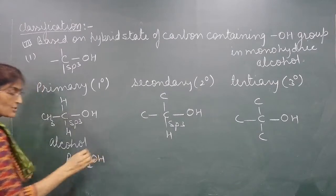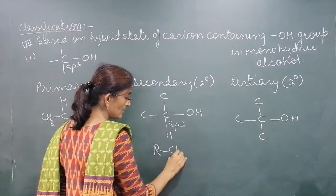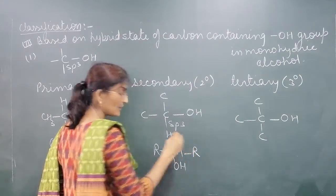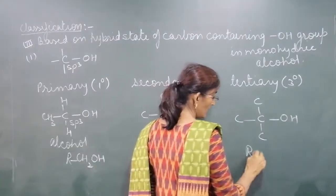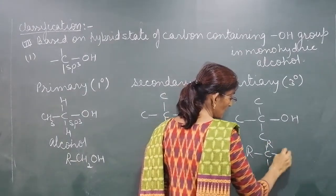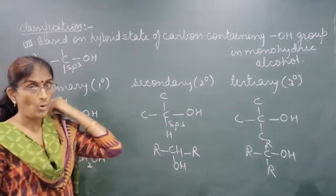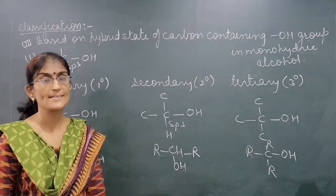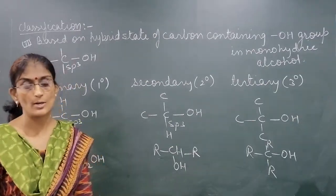This is called Tertiary or three-degree alcohol. The general formula for Primary alcohol is R-CH2-OH. For Secondary alcohol it is R-CH(OH)-R. For three-degree alcohol, all three valencies of the carbon are satisfied by alkyl groups to which the OH group is attached. In all these, the OH-containing carbon is SP3 hybridized — Primary, Secondary and Tertiary alcohol.